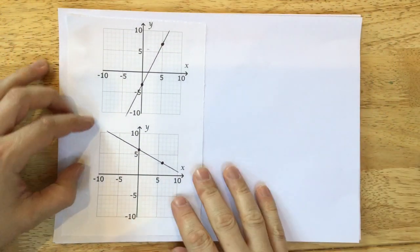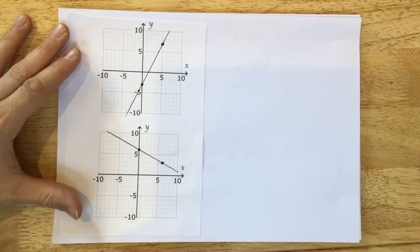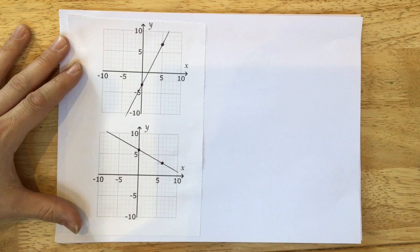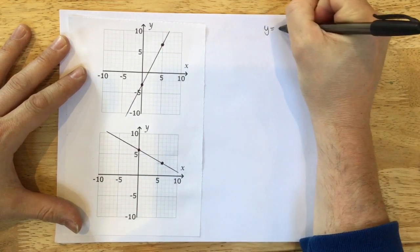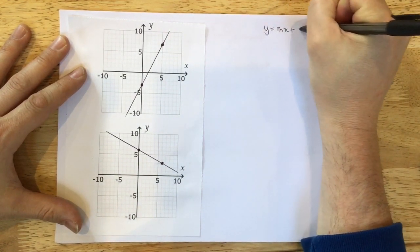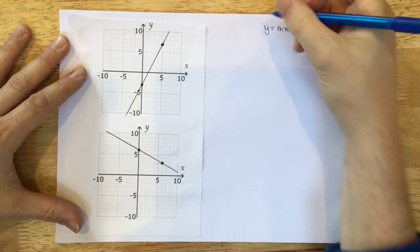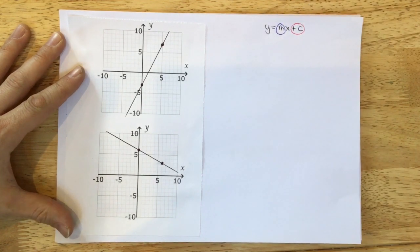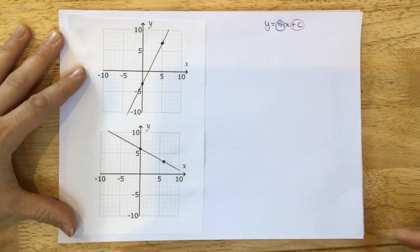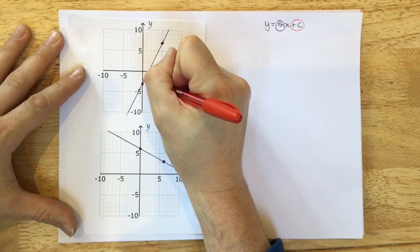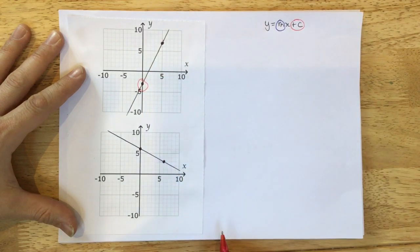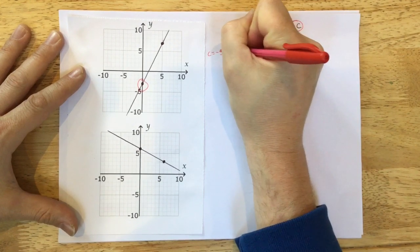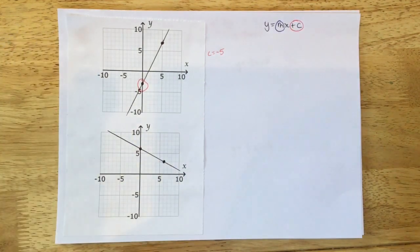But we could be asked something a little trickier to find the equation of a line, just if you have a line drawn. We're going to go about it in the same way, in that we need y equals mx plus c. We need to find the gradient and we need to find the y-intercept. And again, in this graph here, it's nice and easy to see that there's where it crosses the y-axis. So c is equal to minus 5.